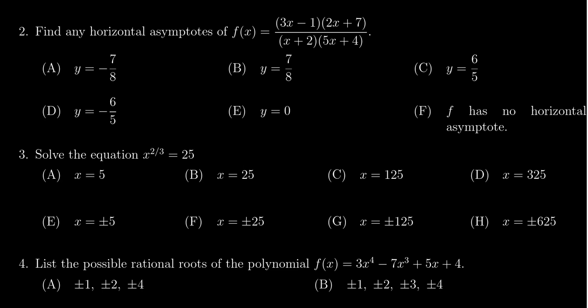We're given a rational function f of x equals 3x minus 1 times 2x plus 7 over x plus 2 times 5x plus 4. And we're asked to find the horizontal asymptotes of this rational function.